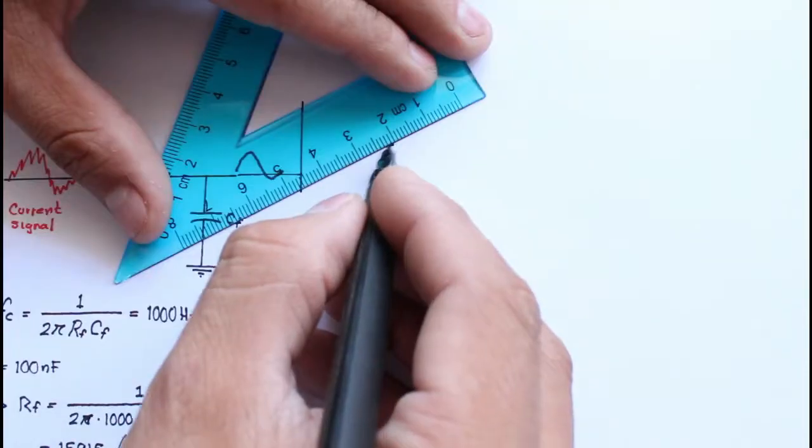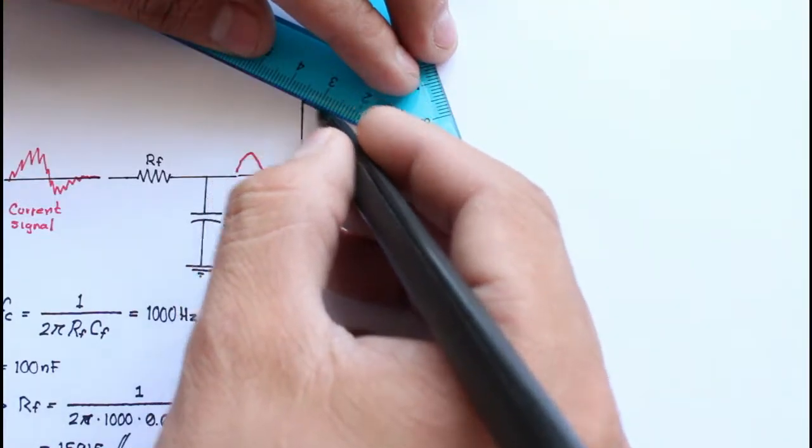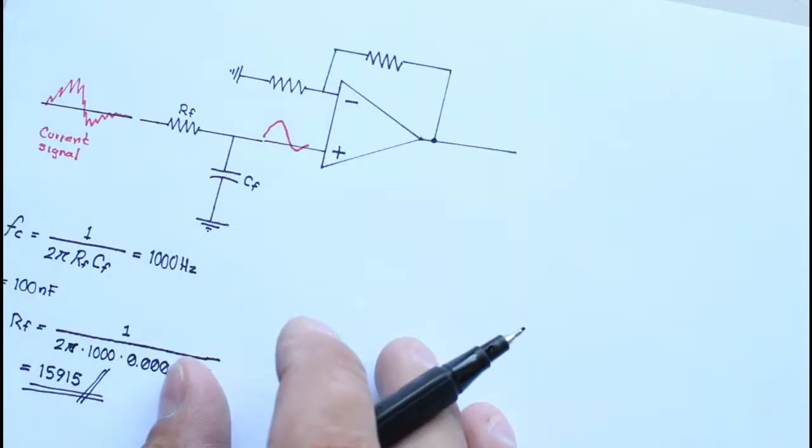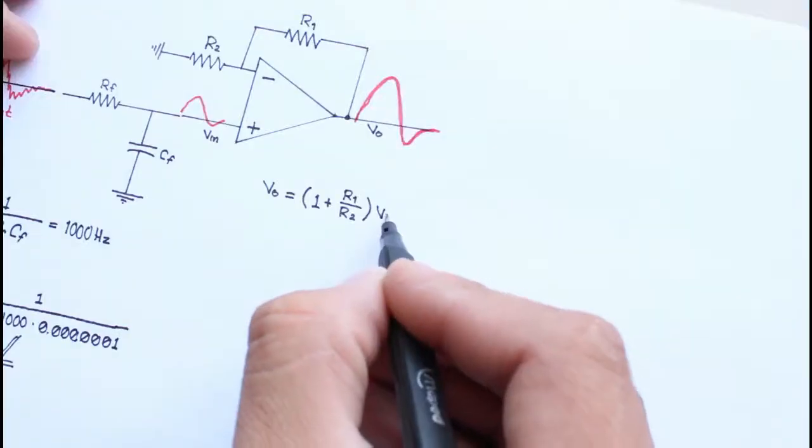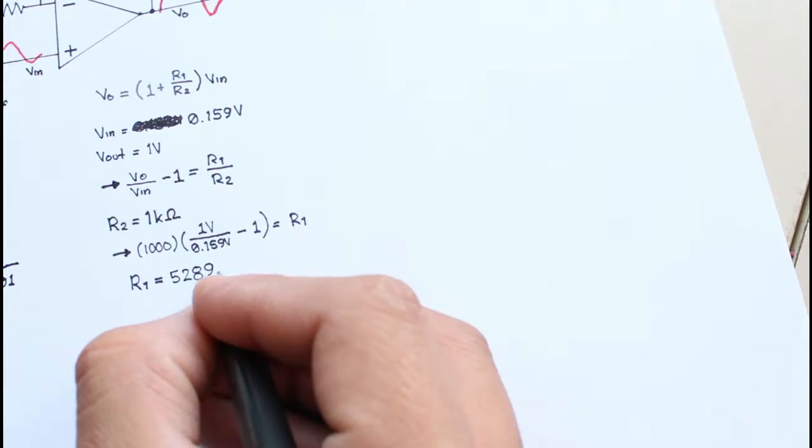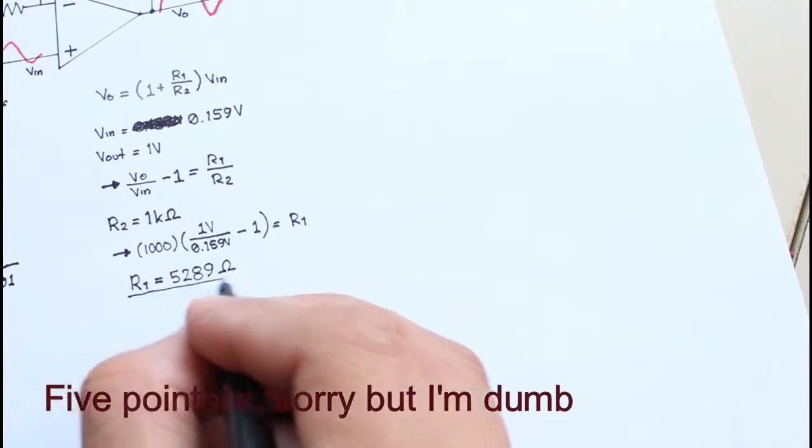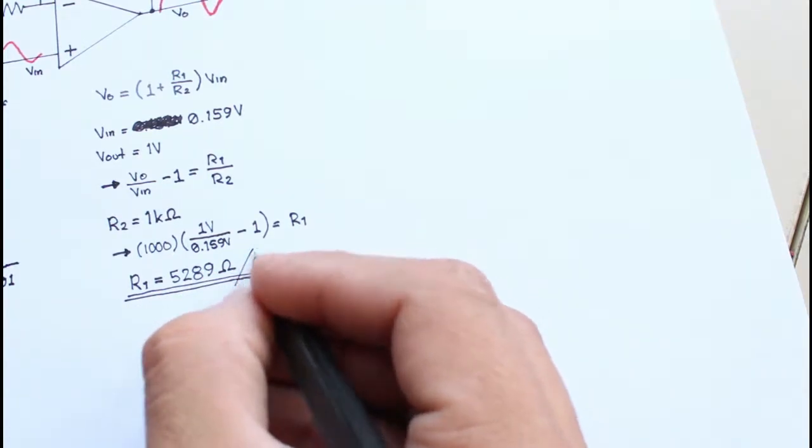Moreover, the voltage across the shunt is quite low, so it's necessary to amplify the signal with an operational amplifier. The gain of the non-inverting amplifier is 5.6 to obtain 1 volt for each ampere of current, more or less.